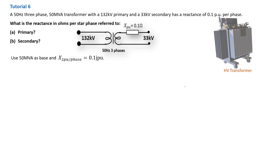Welcome back to this per unit tutorial — this is tutorial number six. We have a 50 Hz three-phase system with a 50 MVA transformer that has a 132 kV primary and 33 kV secondary, making it a step-down transformer. It has a reactance of 0.1 per unit per phase — a per unit reactance on the secondary equal to 0.1 ohm. We are asked to determine the reactance in ohm per star phase as referred to both the primary and secondary.